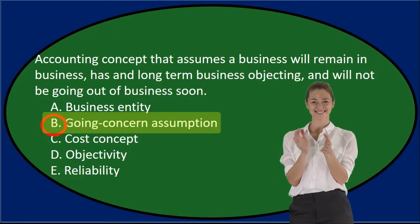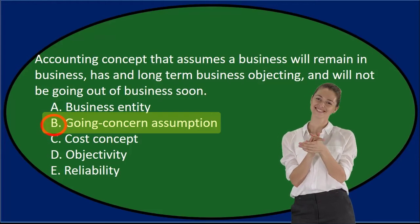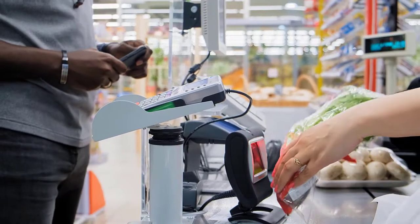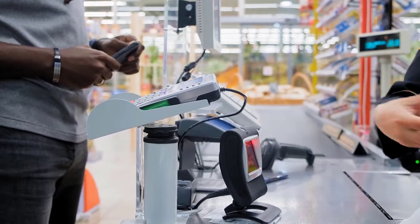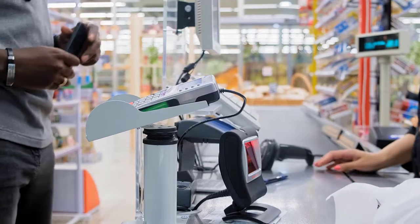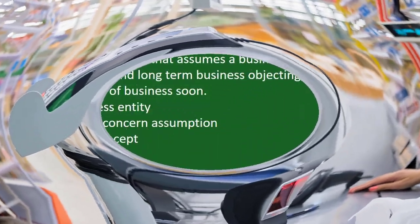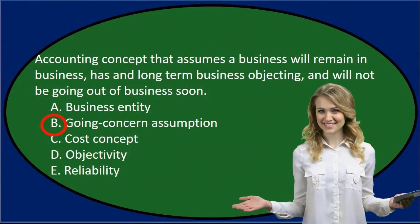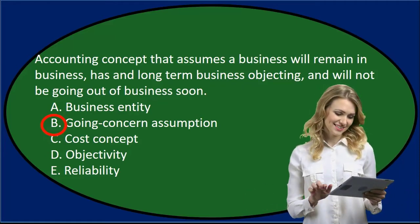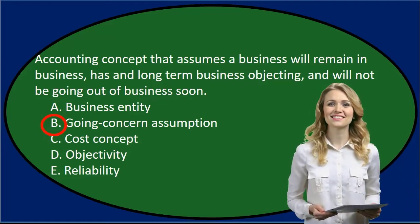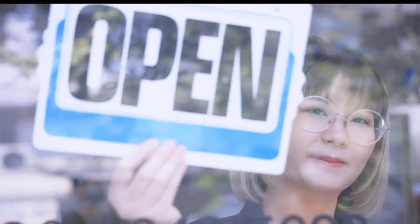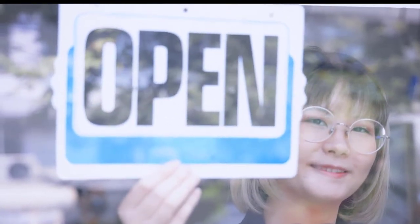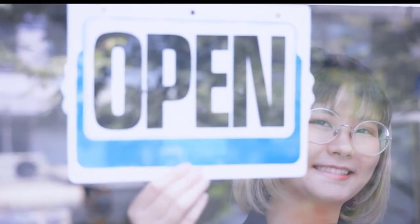However, B is the correct answer — the going concern assumption — being the assumption that the business will remain in business. Very important: if the business is not going to remain in business, they need to disclose that. When we look at the financial statements, we'll have a much different assessment. Our default assumption is that they have a long-term goal — the going concern assumption — to remain in business for a long period of time.